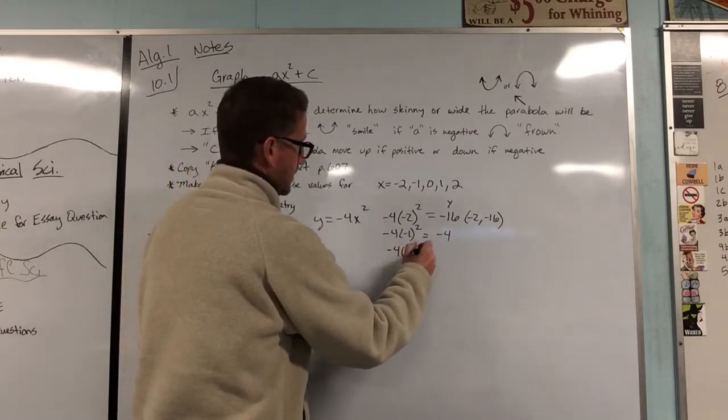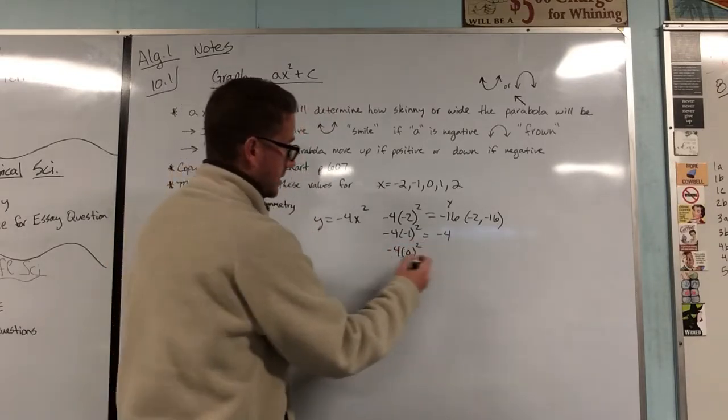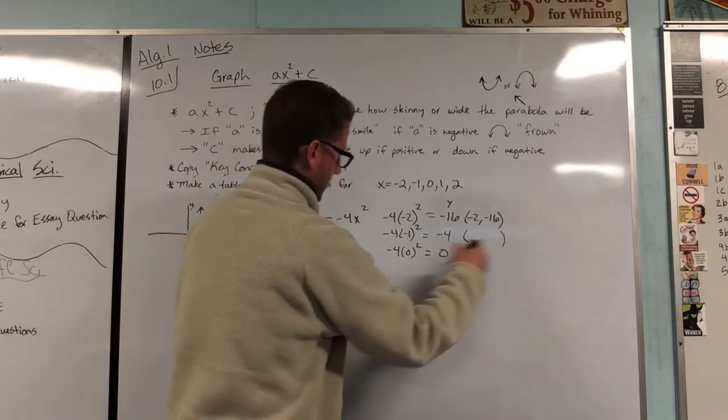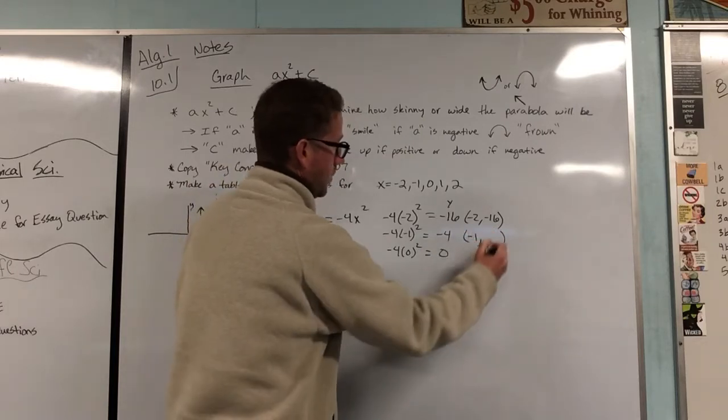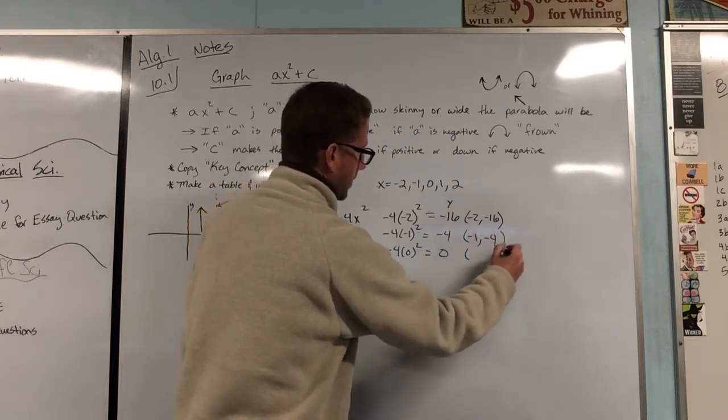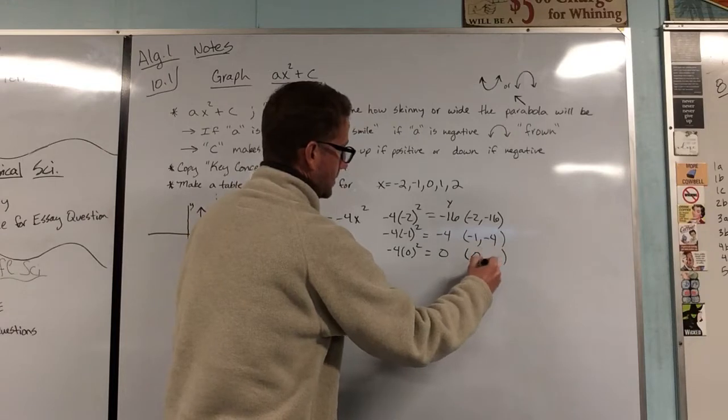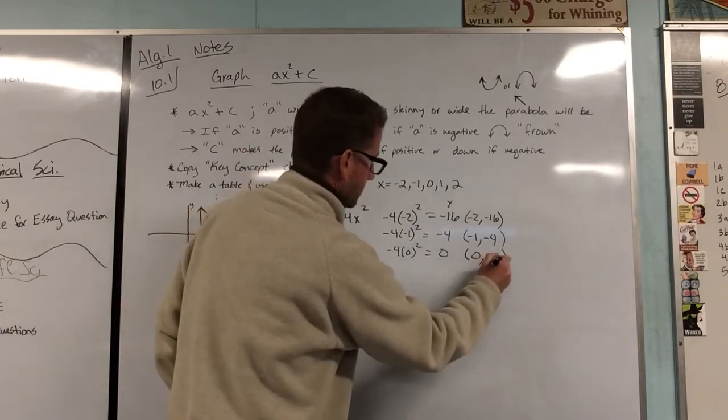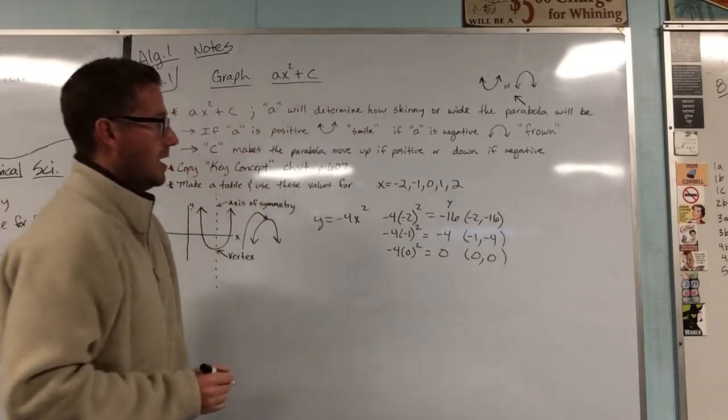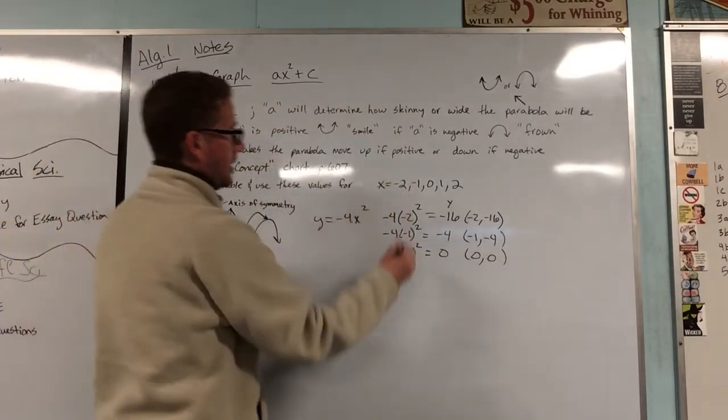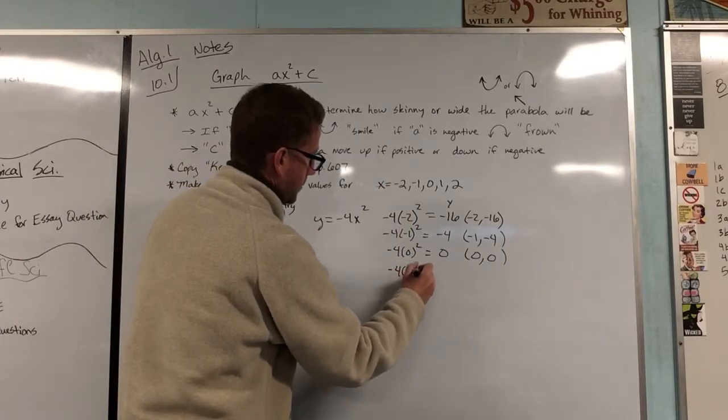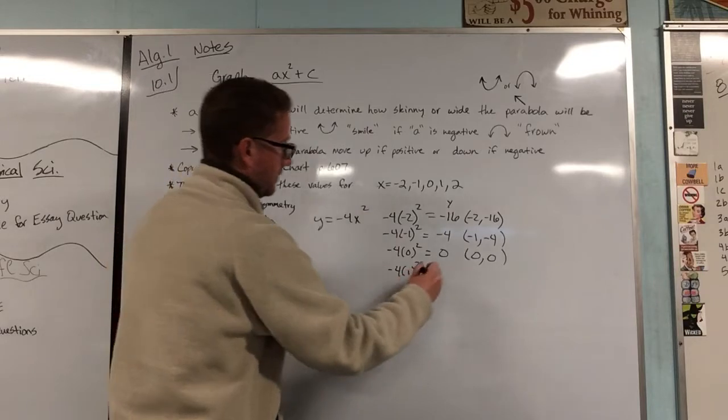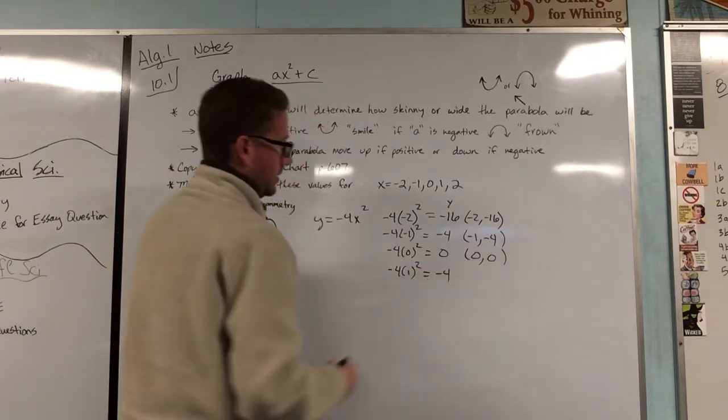Plug in a negative 1, square it, you get a positive 1 times negative 4 is negative 4. Plug in a 0, square it, you get 0 times a negative 4 is a 0. So the points that we're looking at that we created here, negative 1 and negative 4, the point we're looking at here we created is 0 and 0. All right. Well, that's a nice easy one. And then when you plug in a positive, negative 4 times 1, square it, that's 1, negative 4, that's going to also be a negative 4.